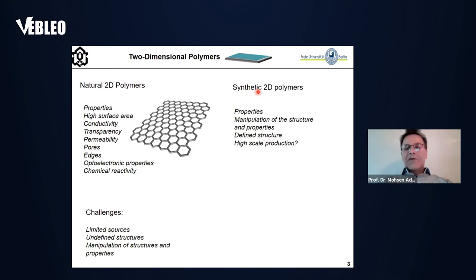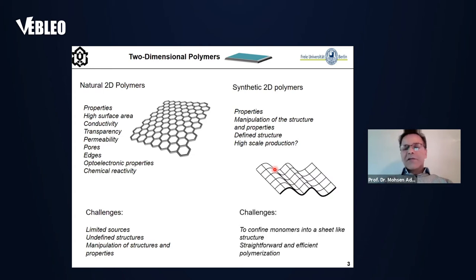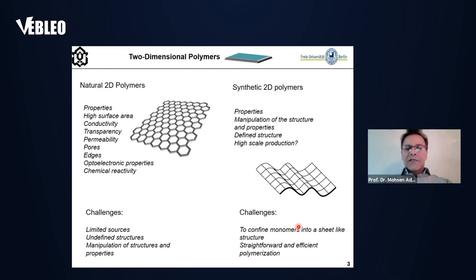We can produce synthetic two-dimensional polymers by usual chemical reactions. We can design them for different applications, and they have a defined structure. What we should do to synthesize such polymers is to connect their monomers by covalent bonds, like what we do for linear polymers. But in this case, we should do it in two dimensions to produce sheet-like structures, which is not so easy, because confining monomers in a sheet-like structure is sometimes challenging, and we don't have a universal method for in-plane polymerization.